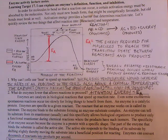An enzyme can tell its substrate from its enantiomer, which is the same molecule in mirror form, and this specificity allows biological organisms to produce only one functional enantiomer during chemical reactions where the products have such isomers. The specificity of an enzyme occurs because the enzyme is a protein with a specific shape. The part of the enzyme that binds the substrate is called the active site. The active site responds to the binding of its substrate by shifting slightly, thereby moving the substrate into a beneficial position for reacting. Enzymes can convert thousands of reactants into products per second.